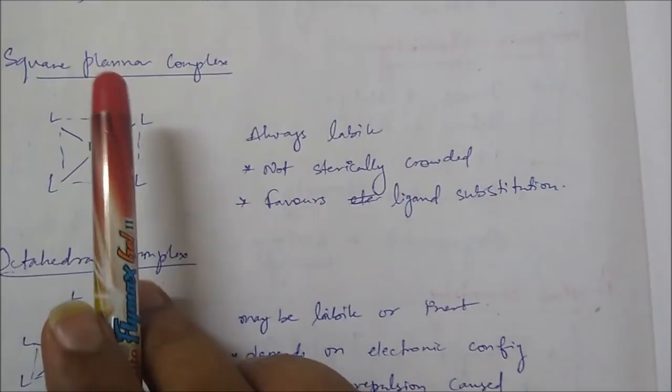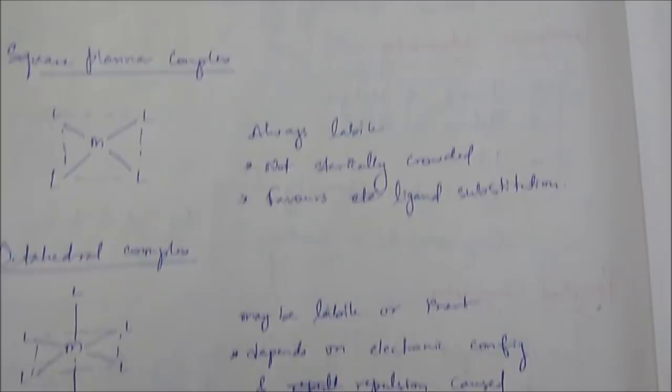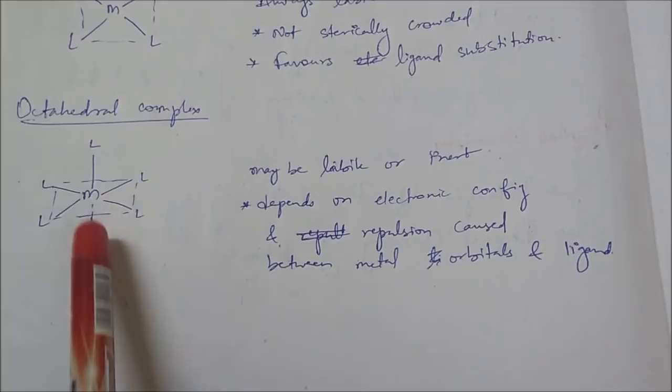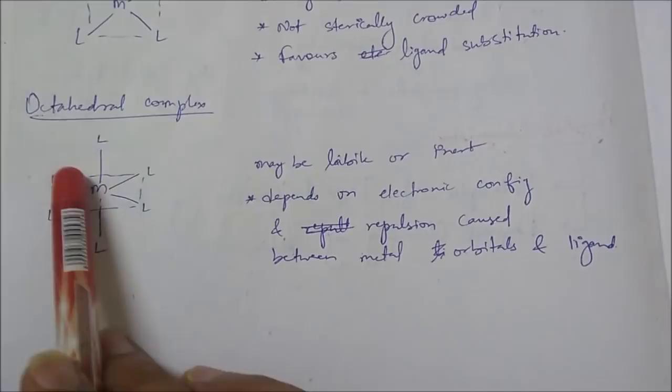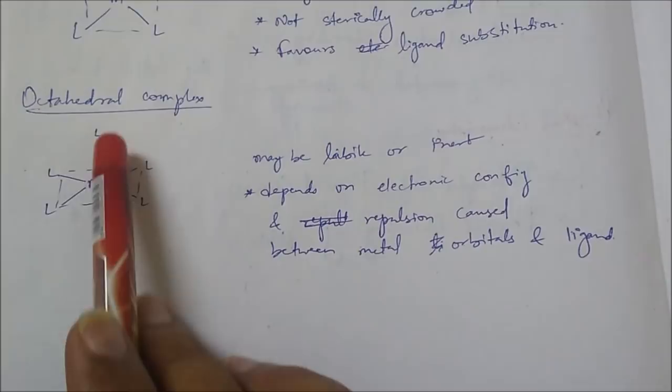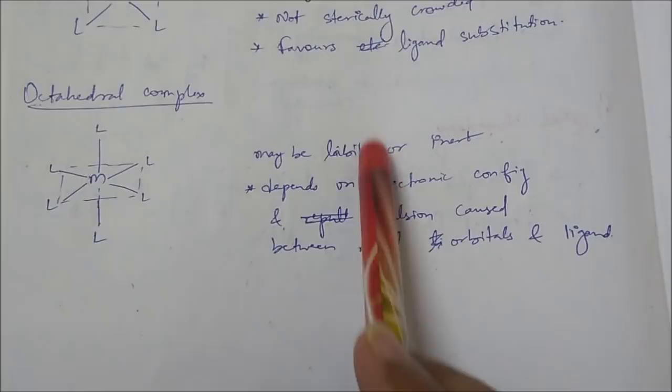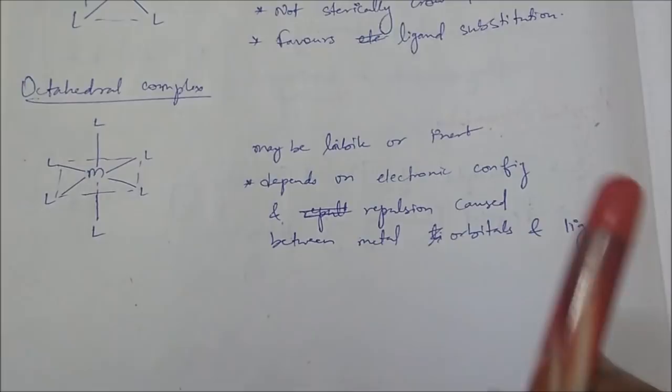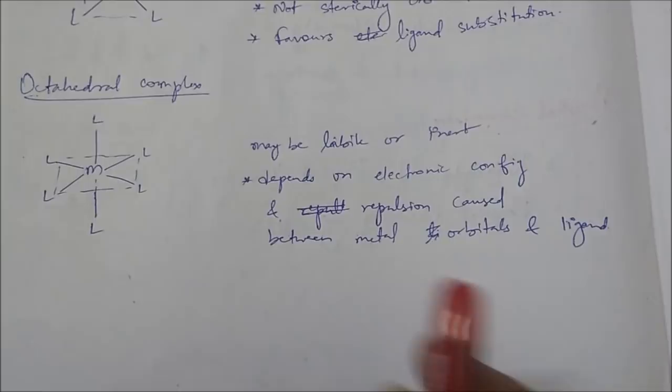Now let's talk about octahedral complexes. In octahedral complexes, the metal is covered from all sides — four ligands on the plane, one above and one below — so they are sterically crowded. These octahedral complexes can be either labile or inert; it all depends on the electronic configuration and the repulsion between the metal orbitals and the ligand orbitals.